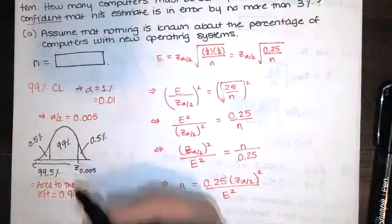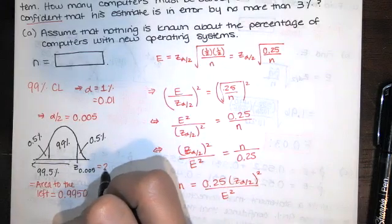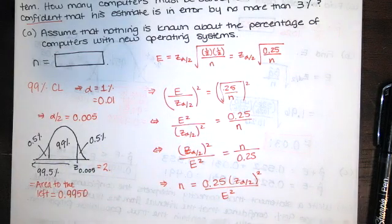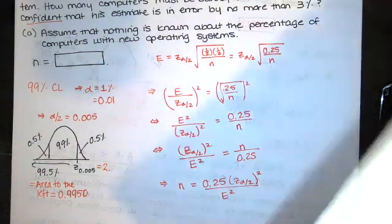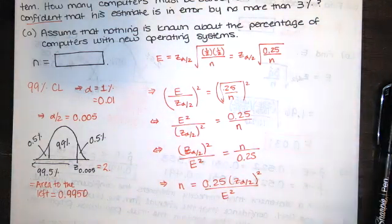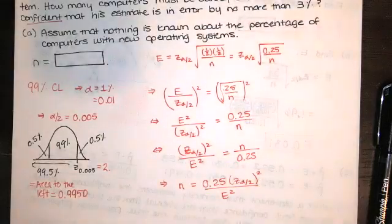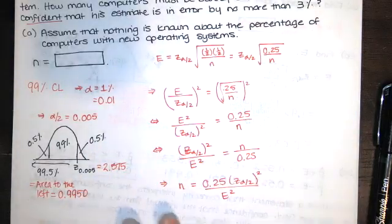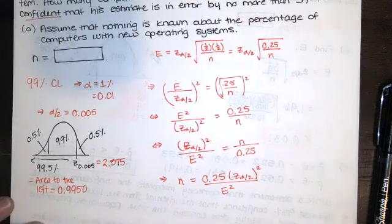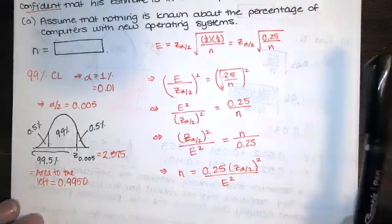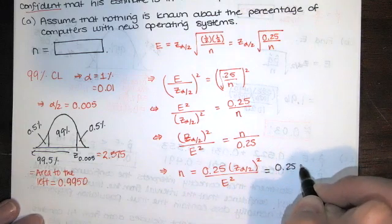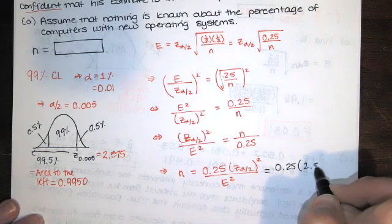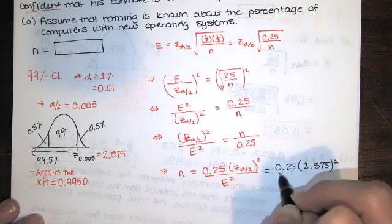So this z-score turns out to be 2... I looked at it and I forgot it immediately. Let's see. 2.575. So that's what we're going to have right there. It's 0.25 times 2.575 and we're squaring that.